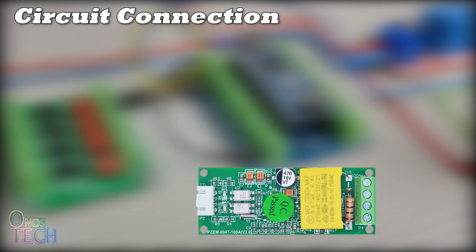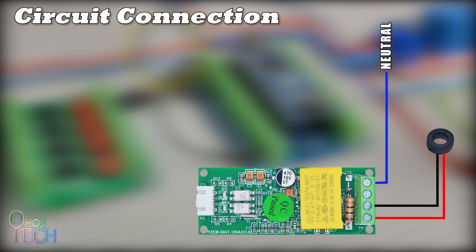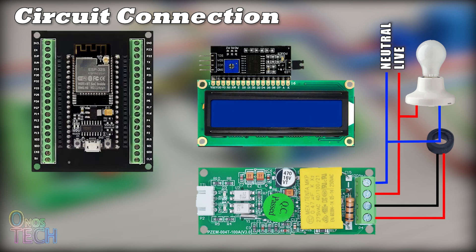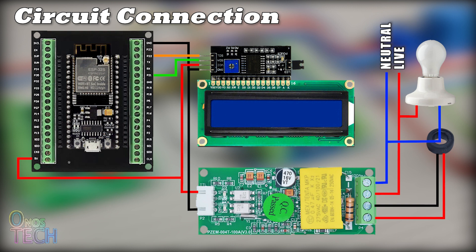The module here measures up to 100 amps of current, so an external current transformer is connected to these inputs. The AC power supply neutral goes here and the live goes here. The AC power supply live to the electrical loads to be measured goes through the current transformer and then to the load. An ESP32 5V and GND terminals will power the module, while the module's RX and TX terminals will connect to the ESP32 TX and RX terminals respectively.